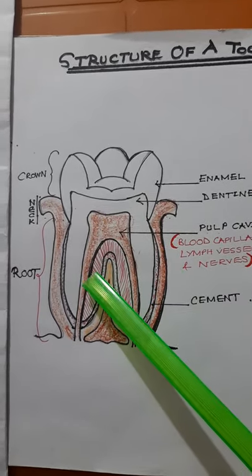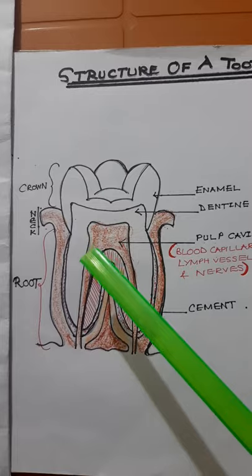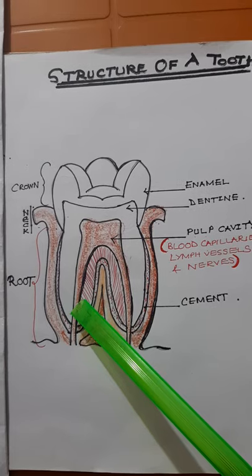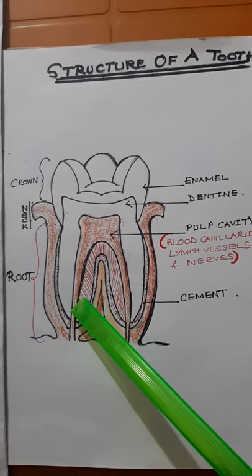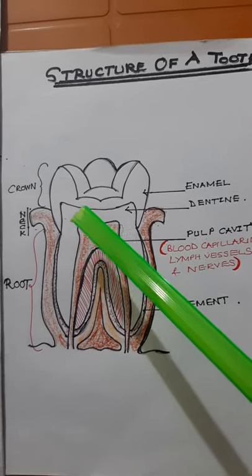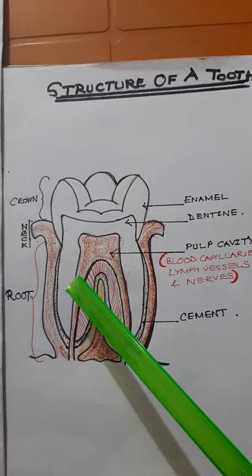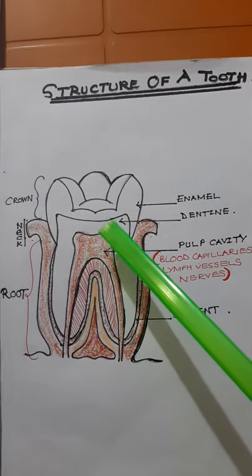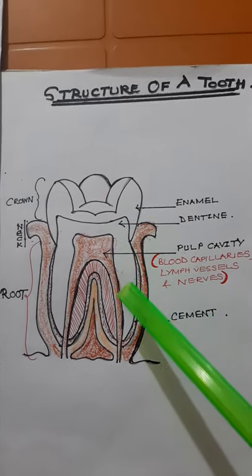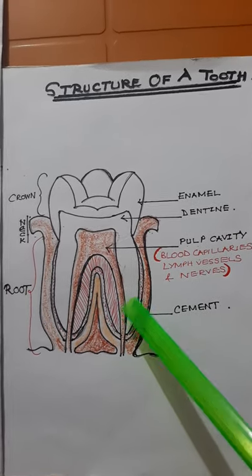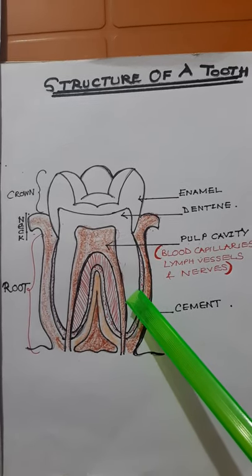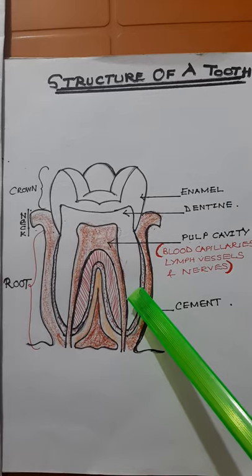Each tooth consists of a root and a crown. The root is the part of the tooth that lies below, inside the gums — it is embedded in the jawbone. The crown is the part above the root that can be seen; the root cannot be seen.